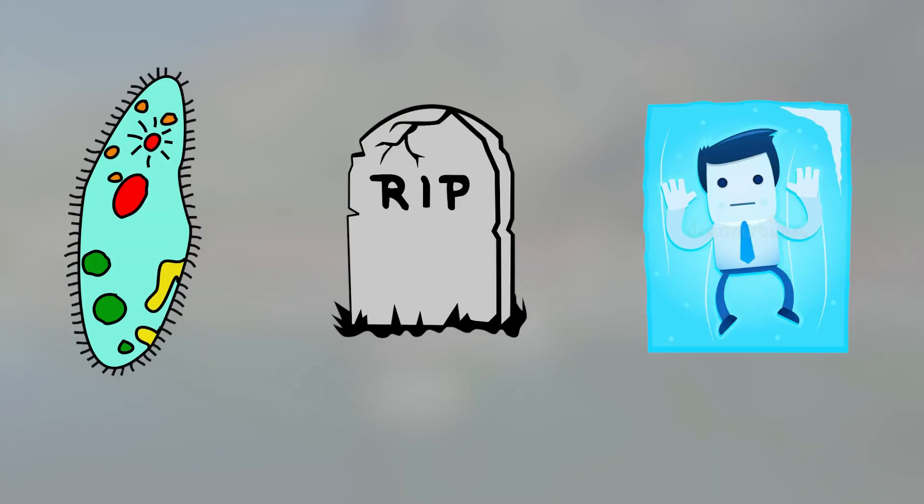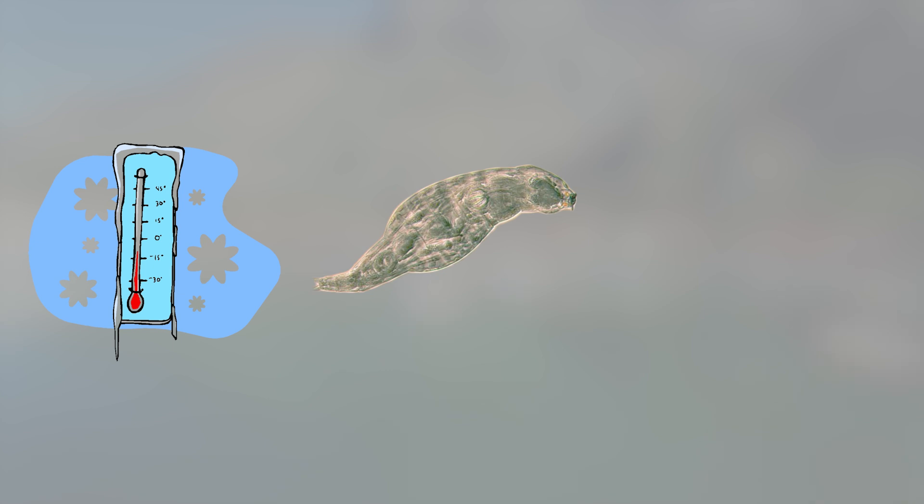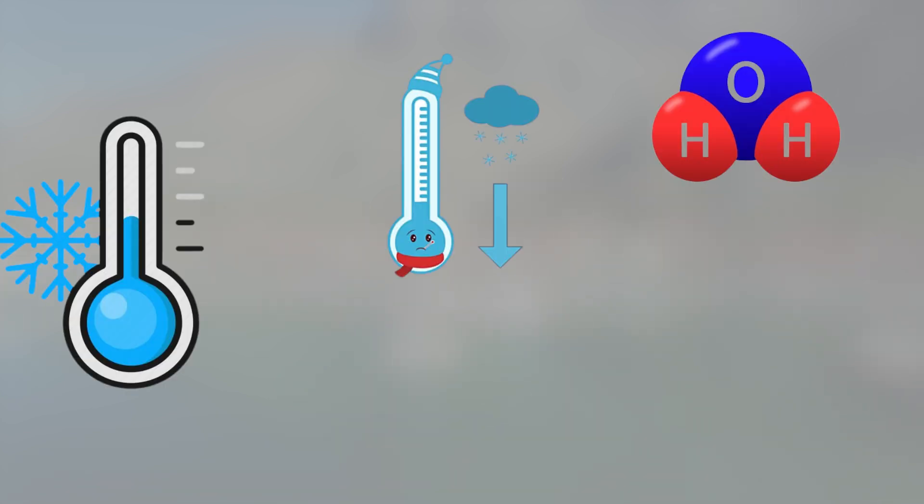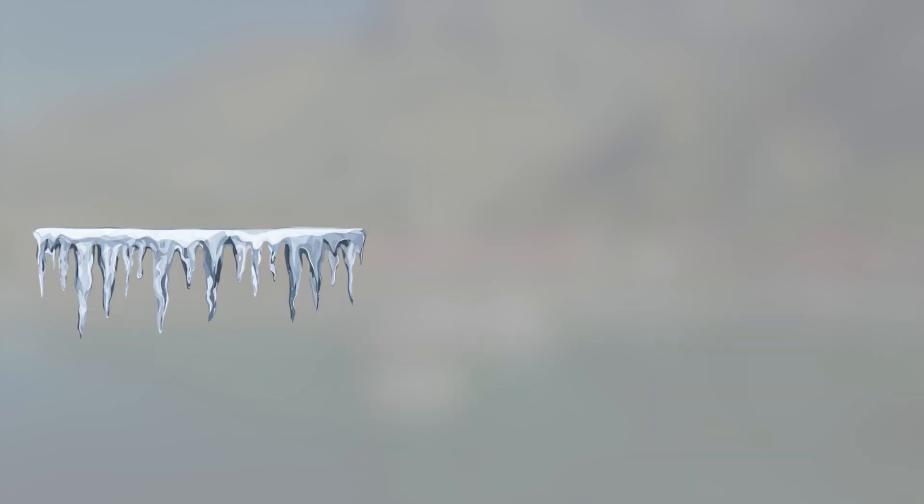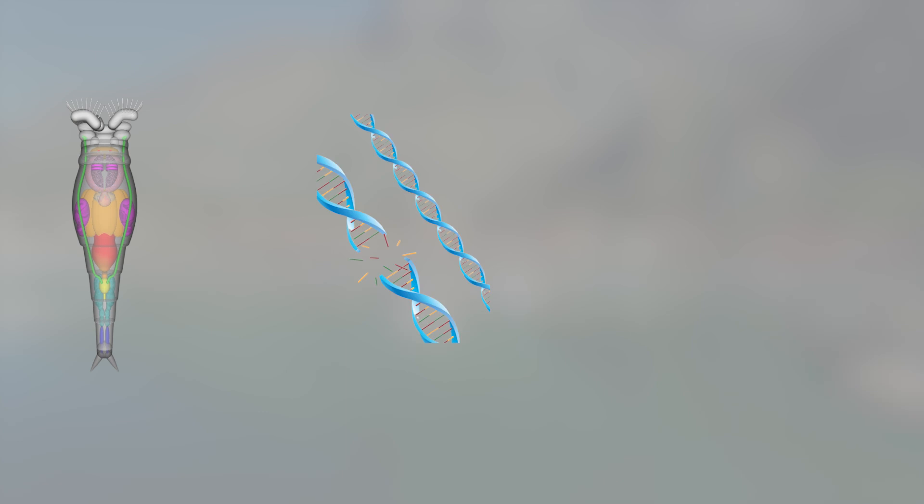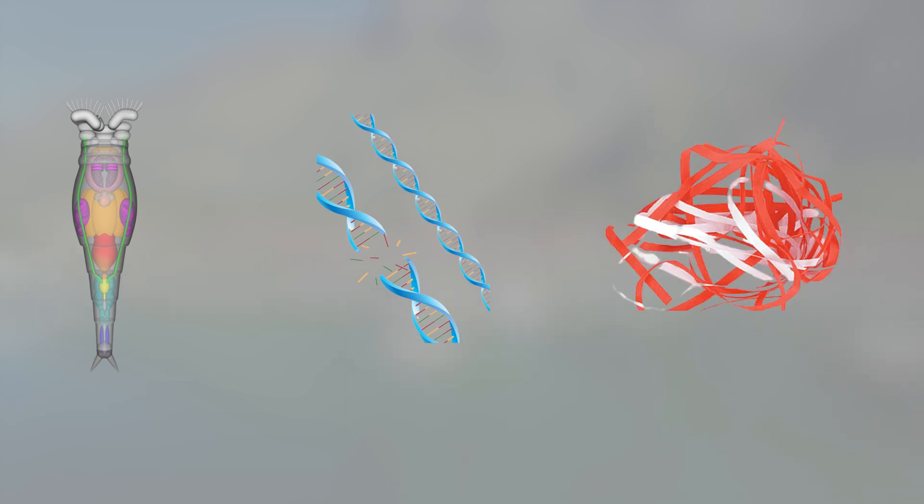Most organisms on Earth die when frozen, not from the cold itself, but from what freezing does to water. As temperatures drop, water molecules expand and crystallize. Those sharp ice crystals form inside living cells, tearing membranes, fracturing DNA, and shredding tissue from within.